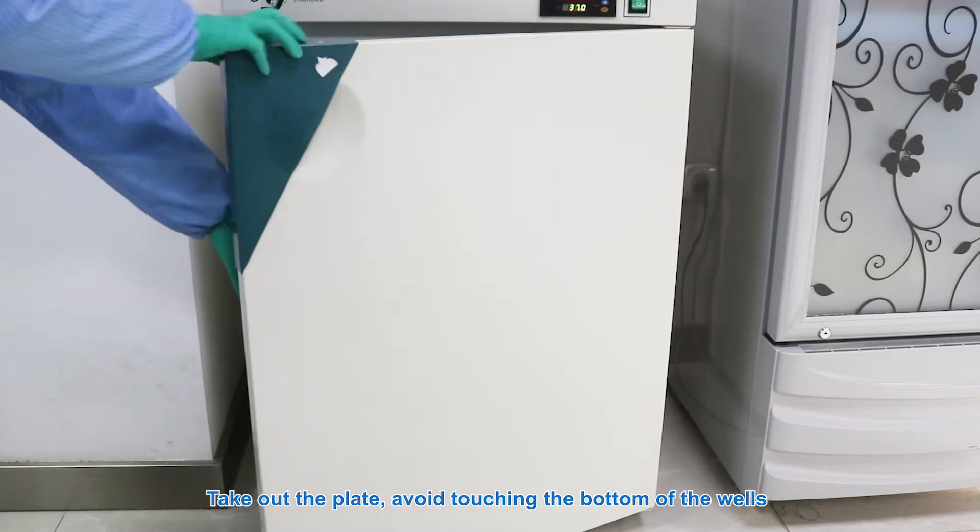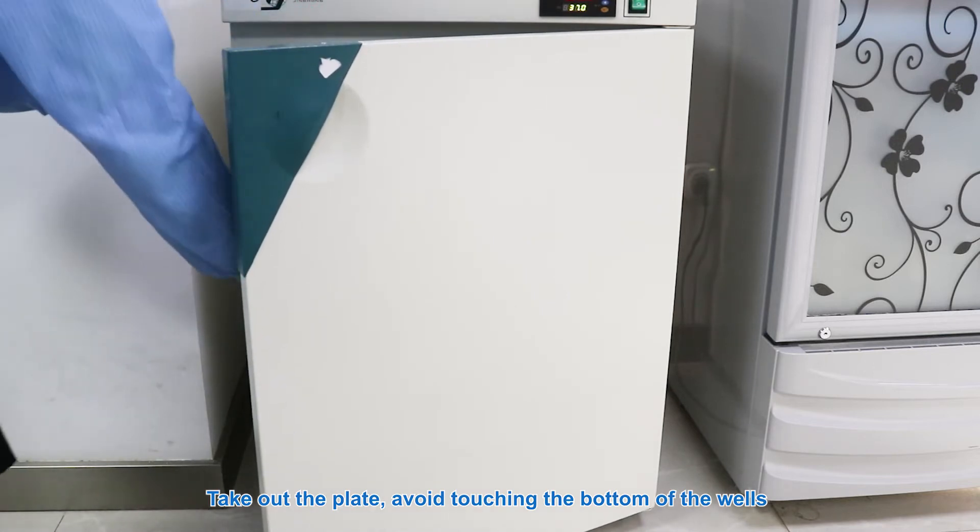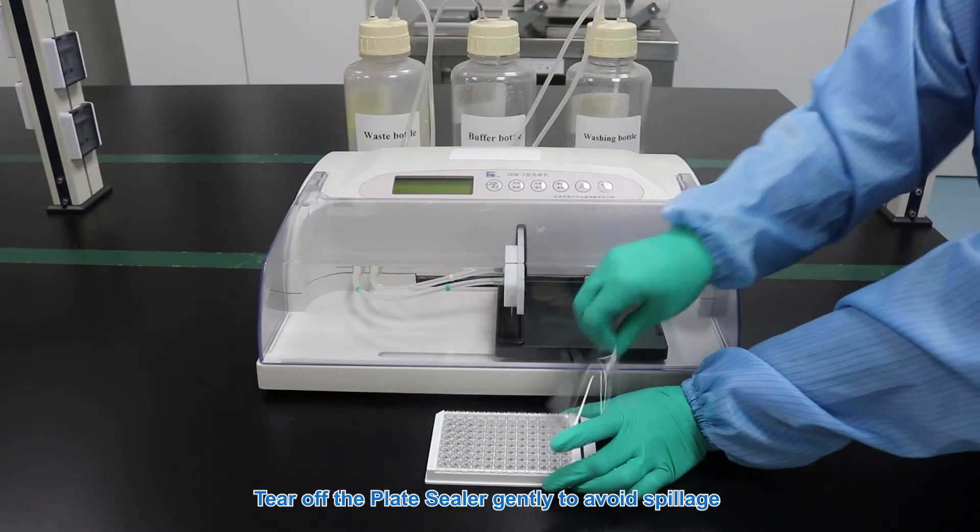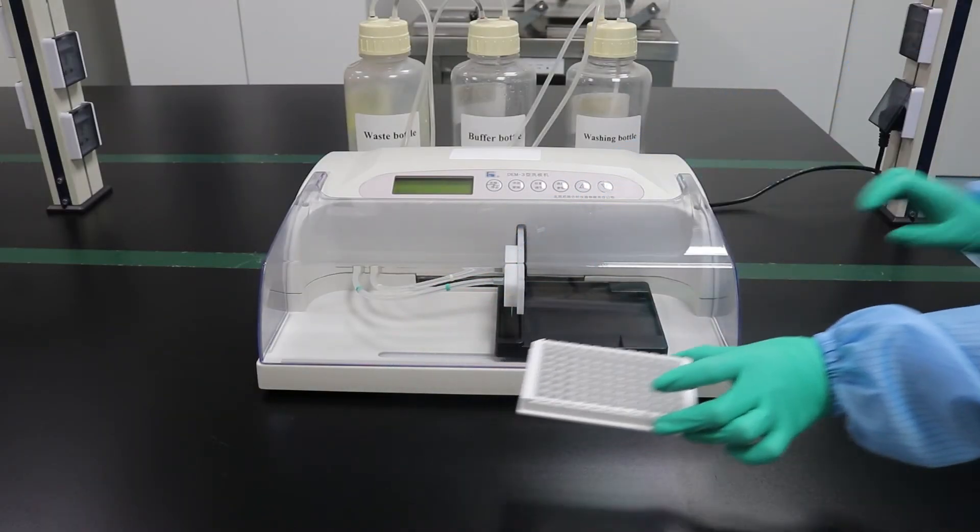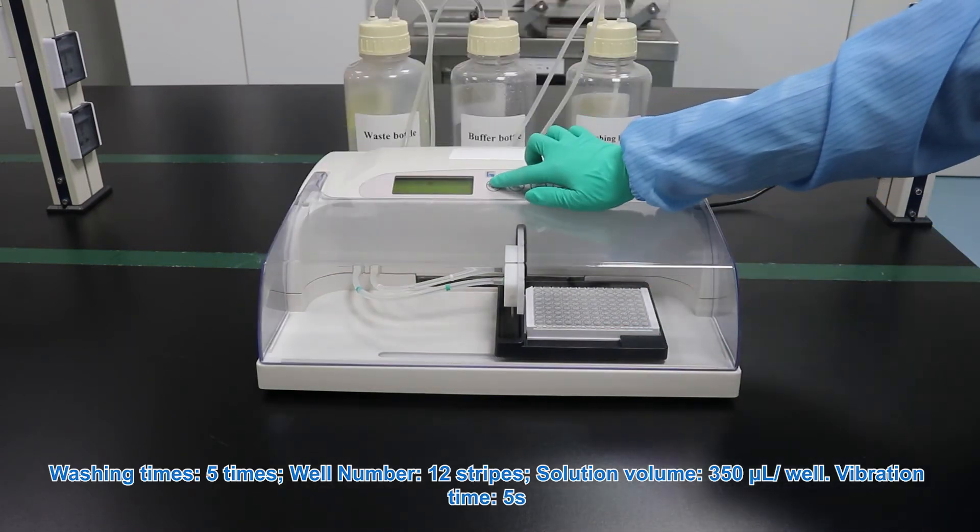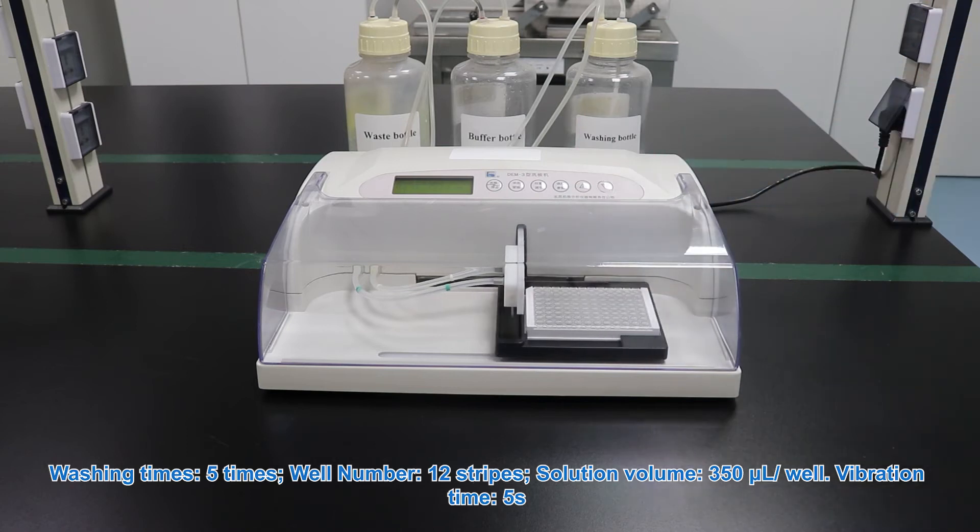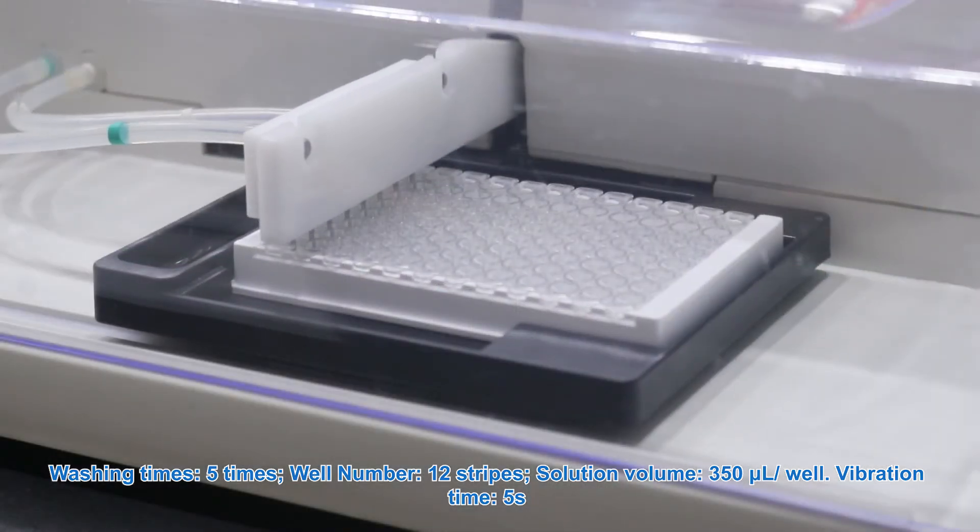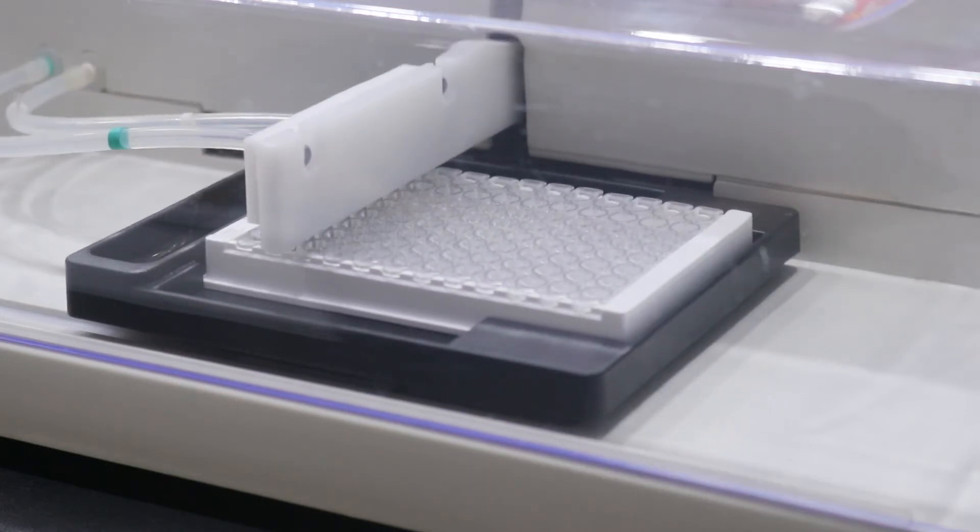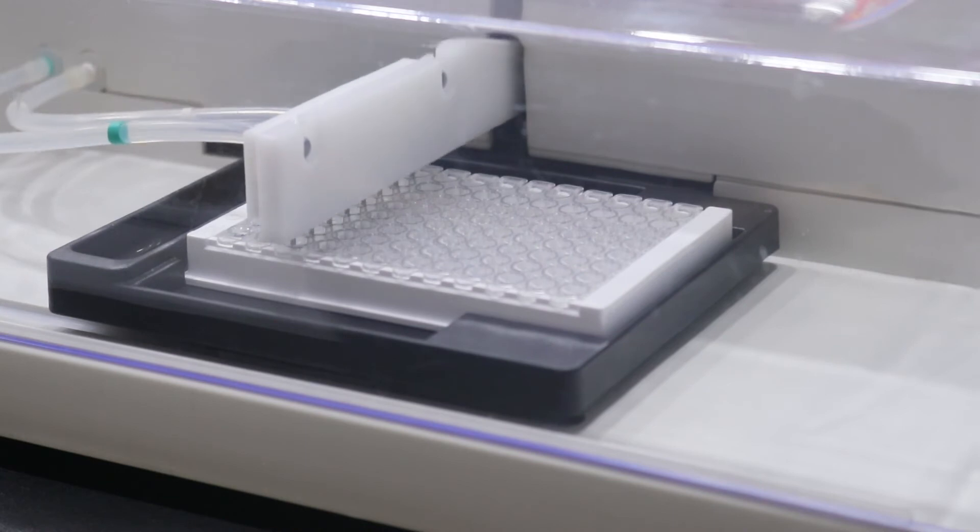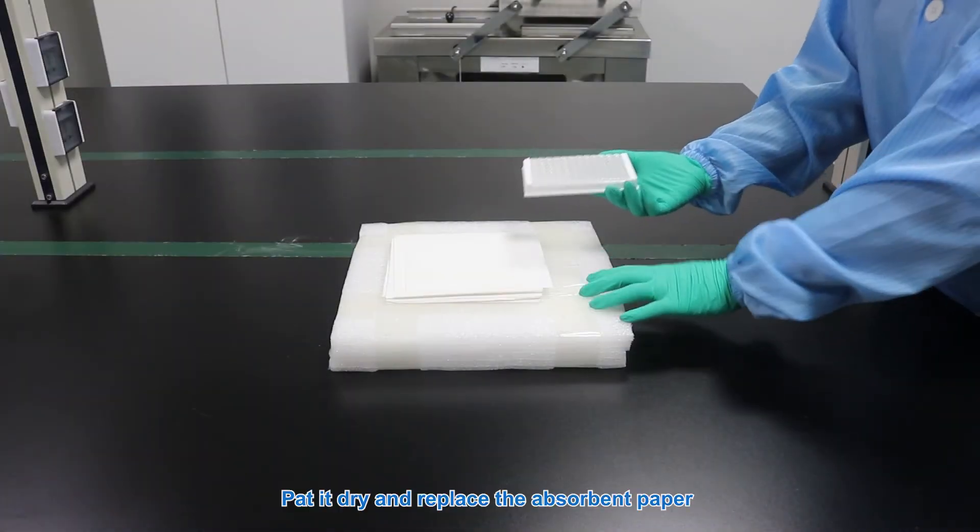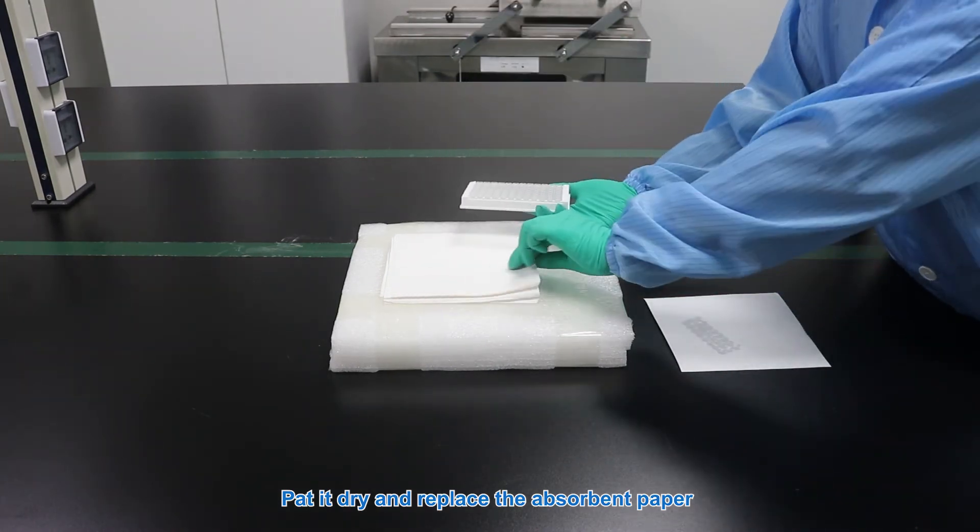Take out the plate. Avoid touching the bottom of the wells. Tear off the plate sealer gently to avoid spillage. Washing times: 5 times. Pat it dry and replace absorbent paper.